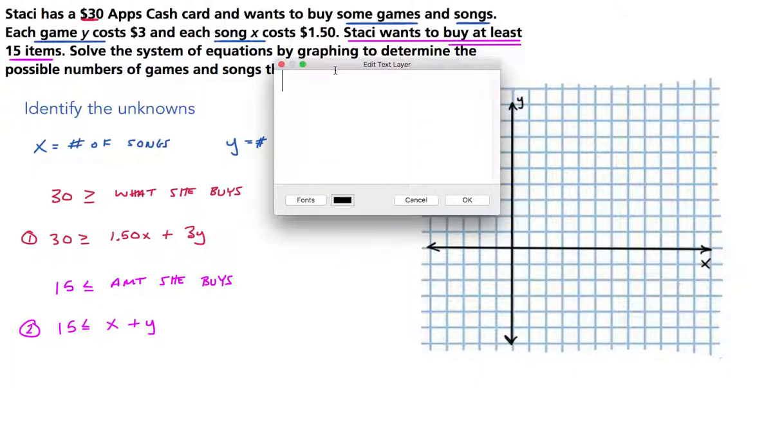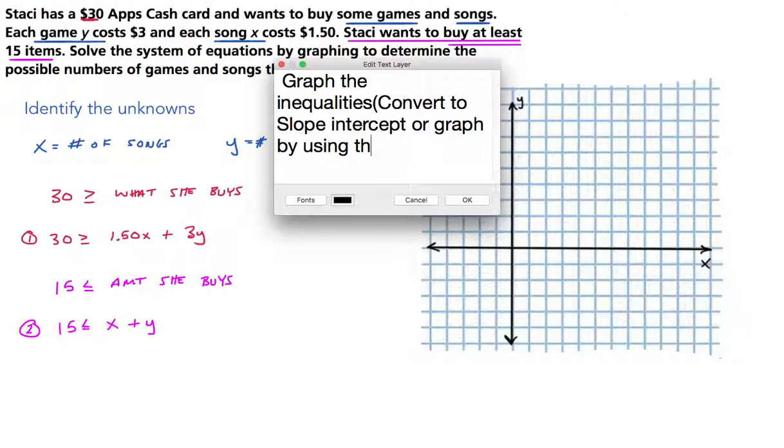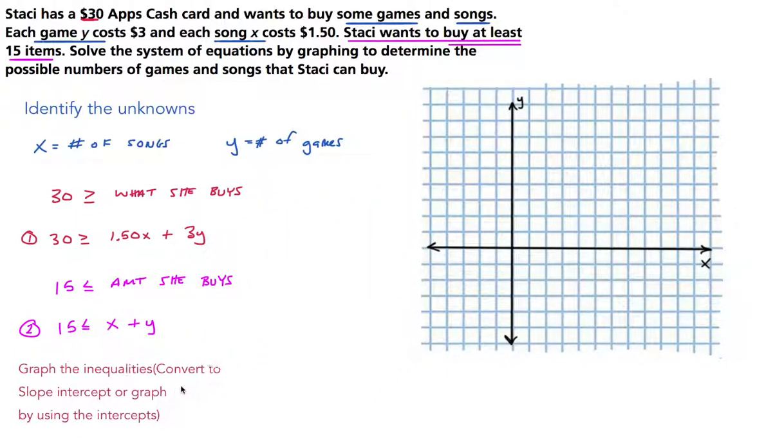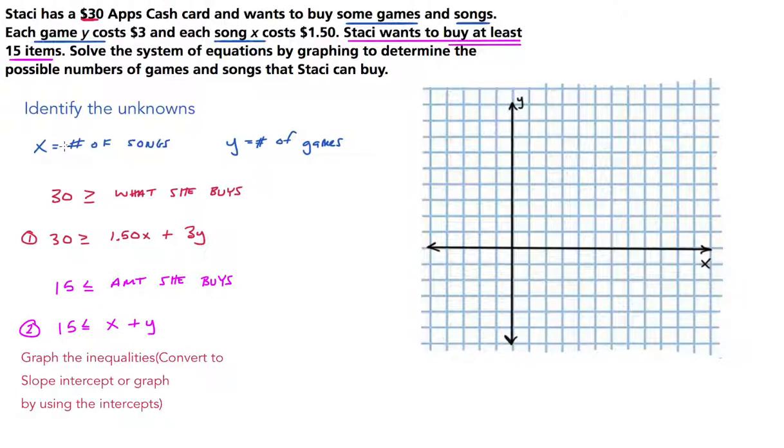Now that we have these inequalities, we're going to graph the inequalities. You can do this one of two ways: you can convert to slope-intercept or graph by using the intercepts. We identified the unknowns, wrote the two inequalities, and now it's time to graph them. I'm going to graph by using the intercepts method.